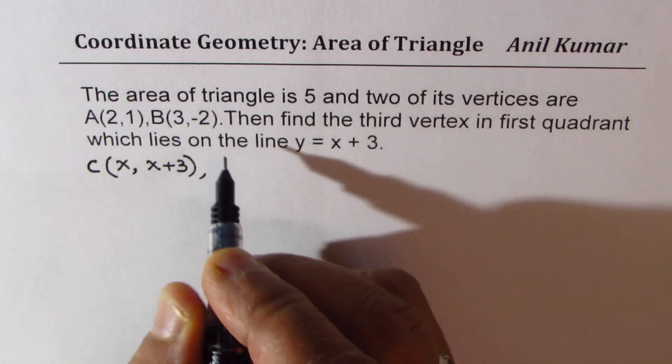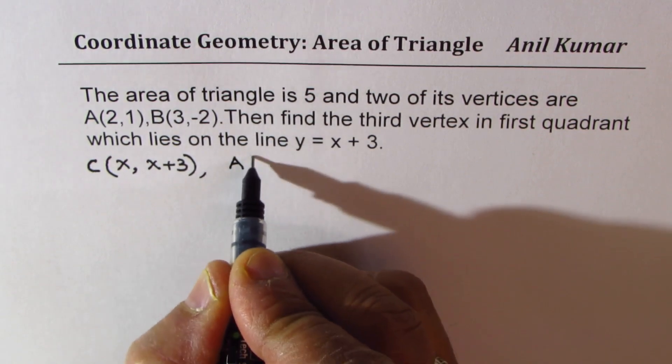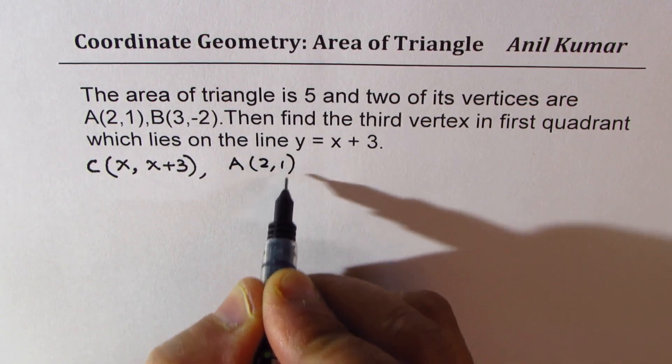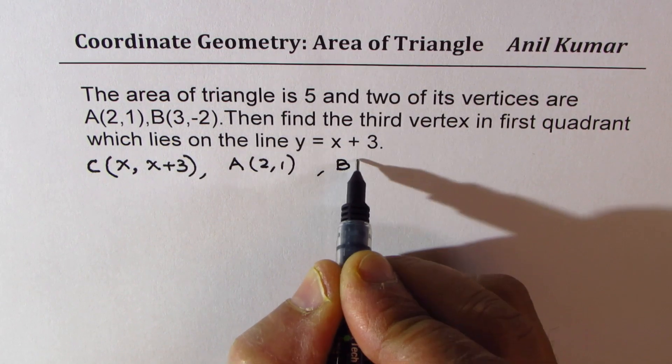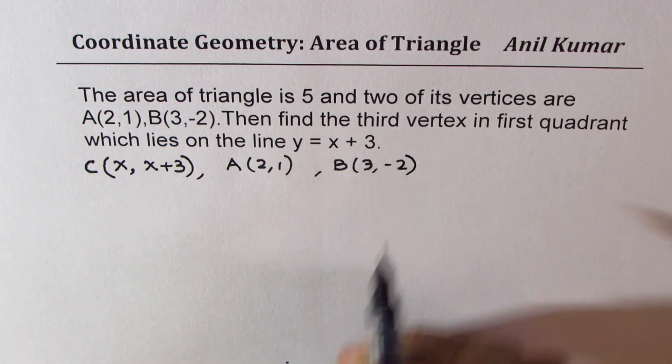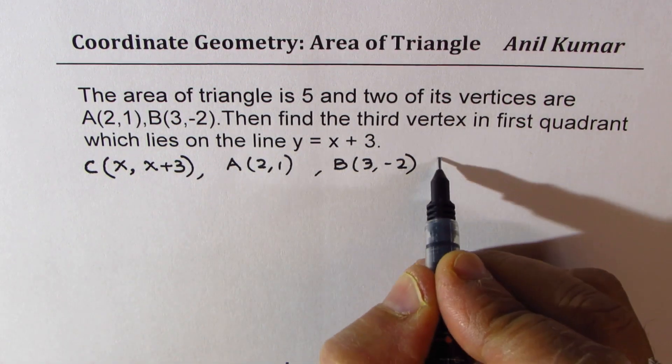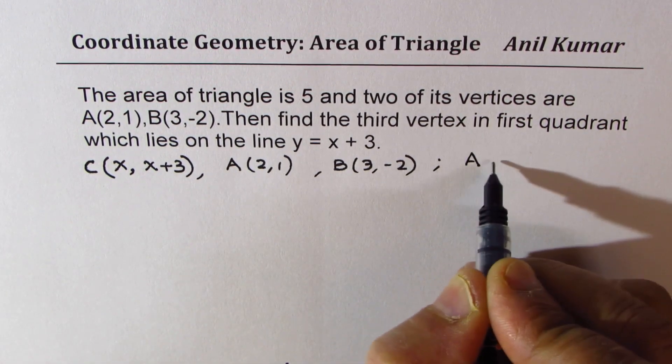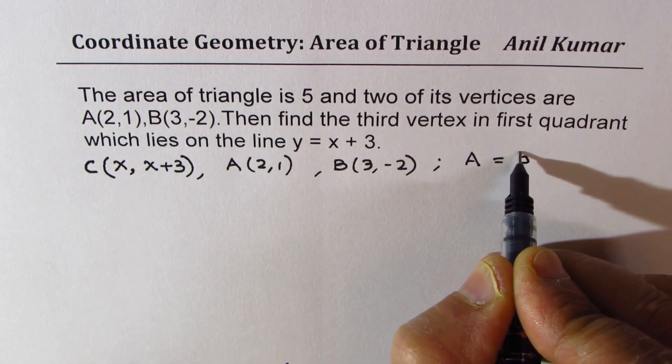We are already given two other coordinates which are A(2,1) and B(3,-2). We are also given that the area of this triangle should be 5 unit square.